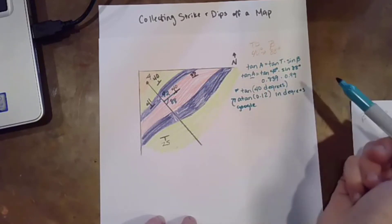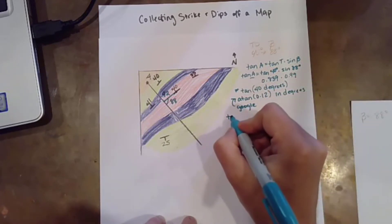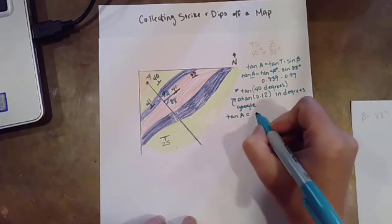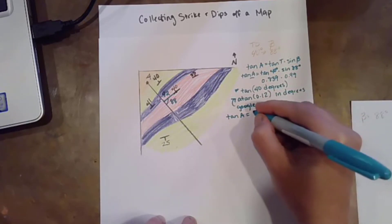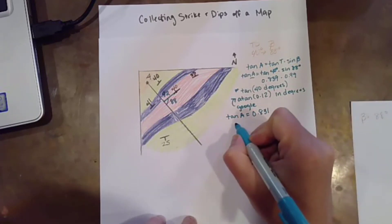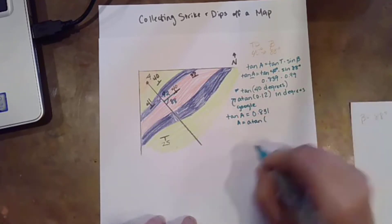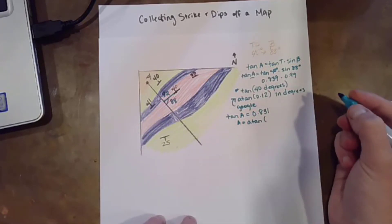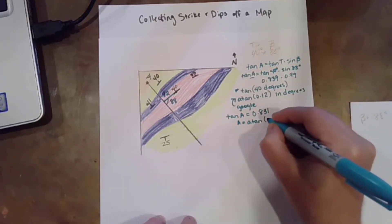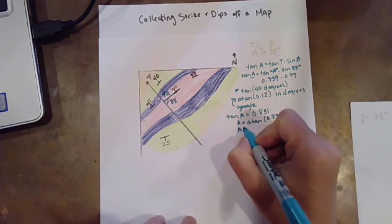Okay, so tangent of 40 degrees we have, sine of 88 degrees we have. Multiply those two together. I get tangent of that apparent dip is 0.831. And then I'm going to take the inverse tangent of both of those. I also tend to write atan instead of inverse tangent because that's the command in Google sheets and in Excel. Okay. So that gives me an apparent dip of 39.7 degrees.